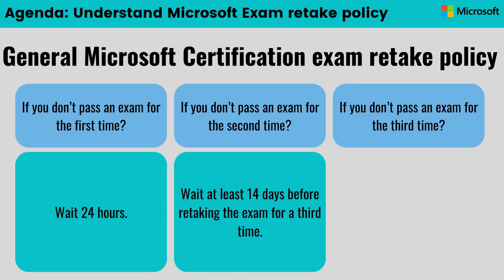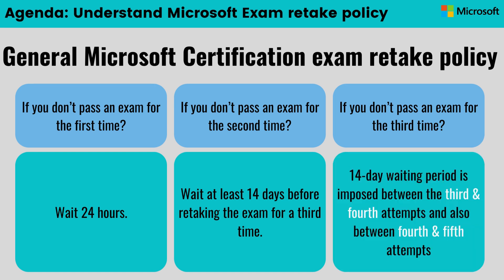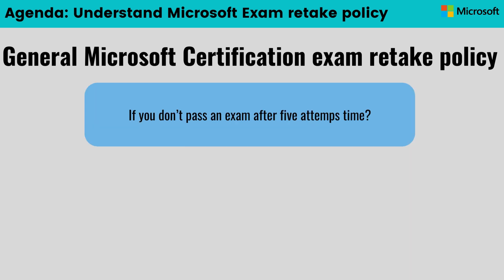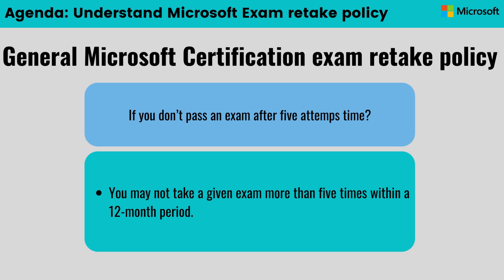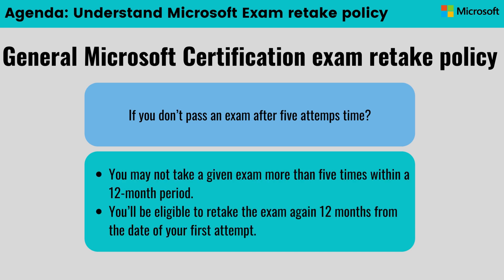If you are not able to pass the exam for the third time, a 14-day waiting period is also imposed between the third and fourth attempts, and between the fourth and fifth attempts. If you are unable to clear the exam even after five attempts, Microsoft says you may not take an exam more than five times within a 12-month period from the day you first attempted it. You will only be eligible to retake the exam again after 12 months from the date of your first attempt.